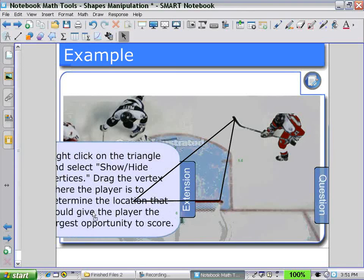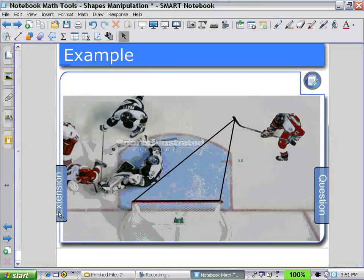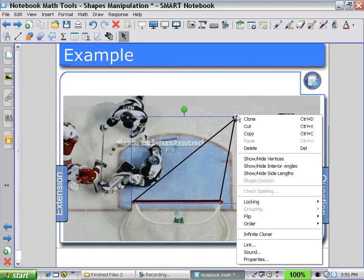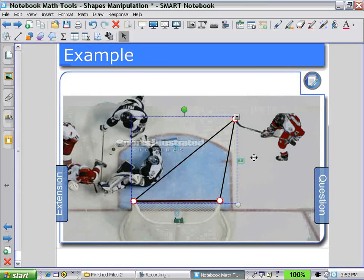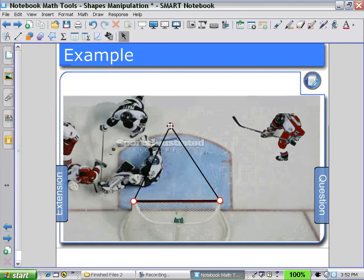So here, we can again select a triangle, use the arrow pull down menu, show and hide the vertices, and then select that vertex and drag it and calculate for the widest angle that would give the player the opportunity to score.